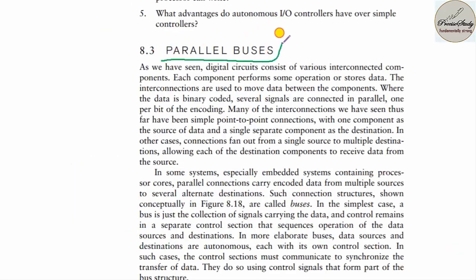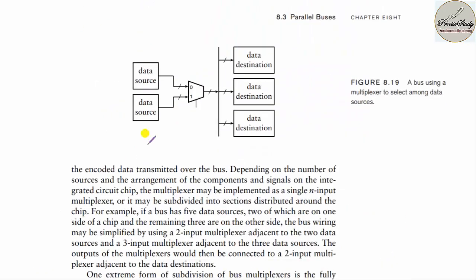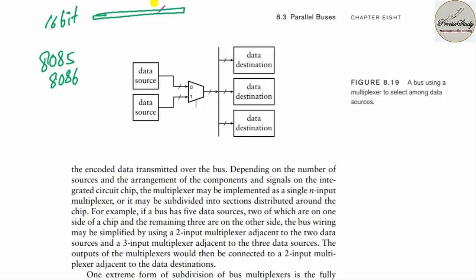Let us talk about parallel bus. A bus is a set of wires used to transfer data or addresses. We need to know the architecture of the AMBA bus. In the 8085 and 8086 microprocessors, the address bus is 16-bit wide — eight lines dedicated as the lower bus and eight lines as the upper bus.